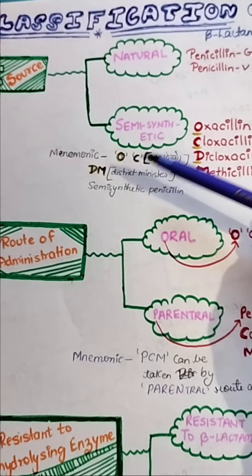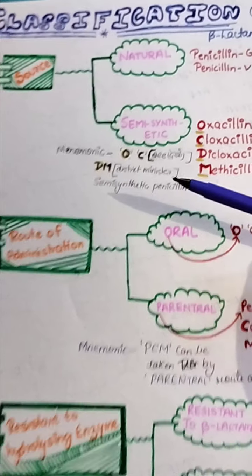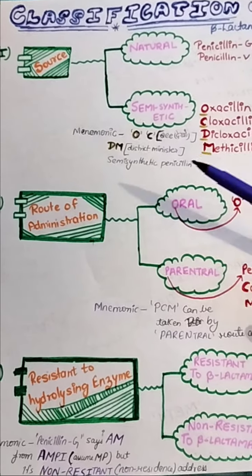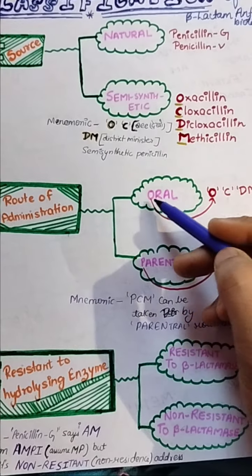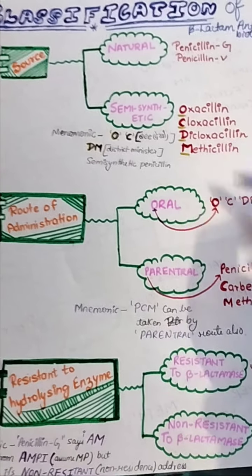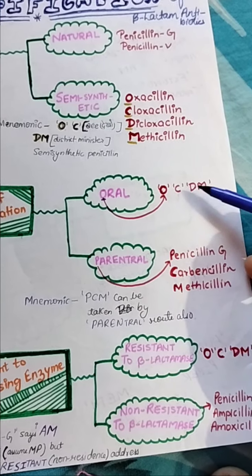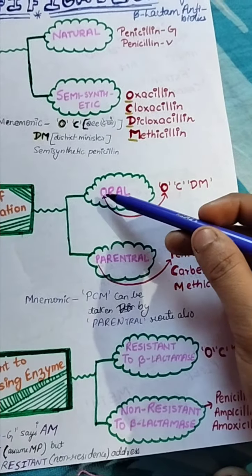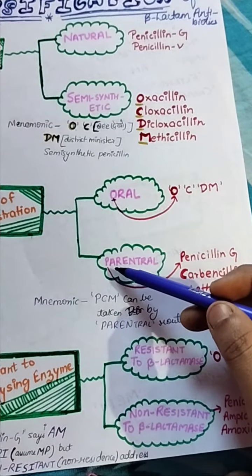OCDM stands for oxacillin, cloxacillin, dicloxacillin, and methicillin — these are the semi-synthetic penicillins. The next category is route of administration, which is of two types: oral and parenteral. For oral, the starting letter O from OCDM gives us the same drugs: oxacillin, cloxacillin, dicloxacillin, and methicillin.